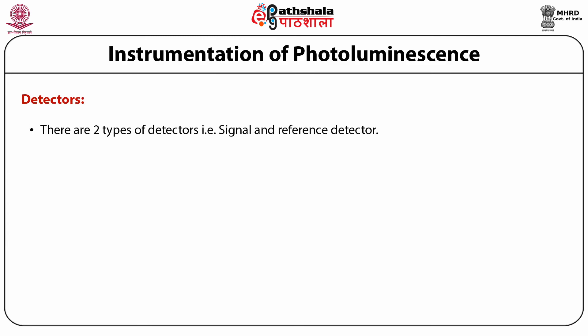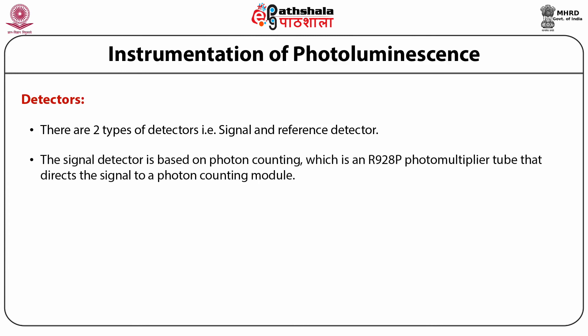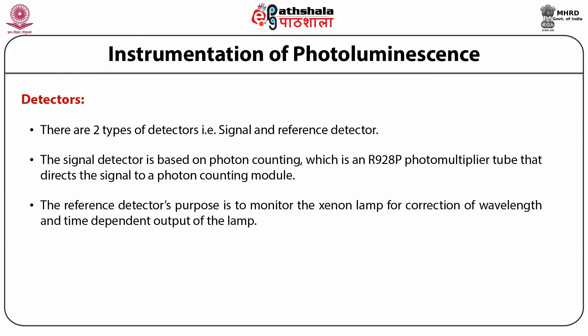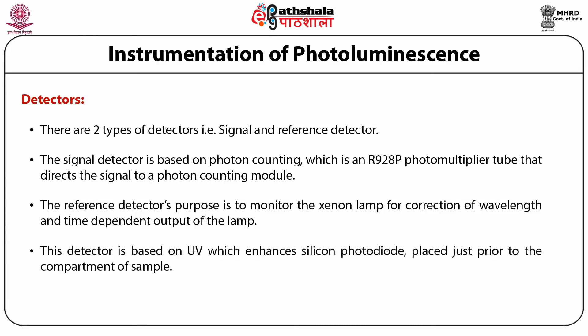There are two types of detectors: signal and reference detectors. The signal detector is based on photon counting using an R928P photomultiplier tube that directs the signal to a photon counting module. The reference detector monitors the xenon lamp for correction of wavelength and time-dependent output of the lamp. This detector is based on a UV-enhanced silicon photodiode placed just prior to the sample compartment.